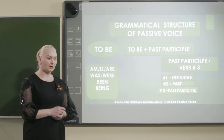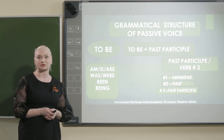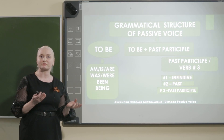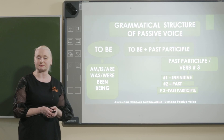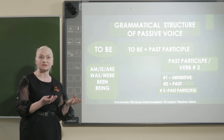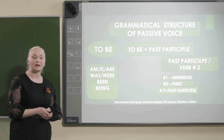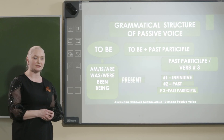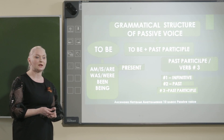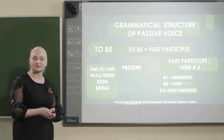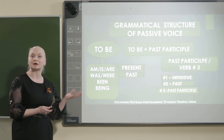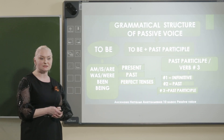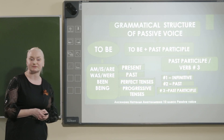Let's speak about grammatical structure. Grammatical structure consists of verb to be plus past participle. What is verb to be? Как вы знаете, глагол to be имеет несколько форм. And we have to consider them: am, is, are for present tense — в настоящее время. Was and were for past tense — для прошедшего времени мы используем was and were. And been for perfect tenses, and being for progressive tenses.